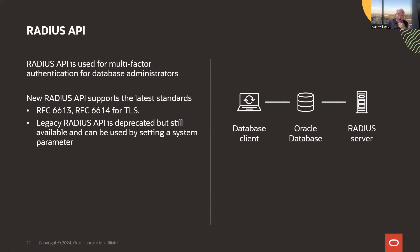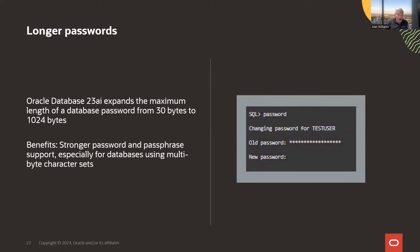RADIUS is used a lot for multi-factor authentication, and we're finding MFA is also a reason why folks are moving to cloud integrations with both OCI IAM and Microsoft Entra ID — because logging into those consoles forces the appropriate MFA. Also long overdue: longer passwords. We used to have a 30-byte maximum, which wasn't great for passphrases or multi-byte characters. We've now extended to over a thousand bytes. This is integral to the database and can't be backported.